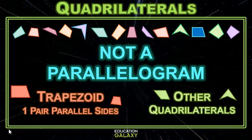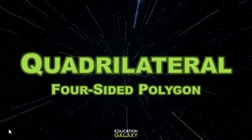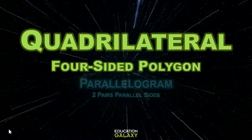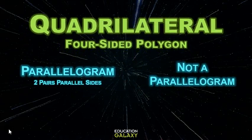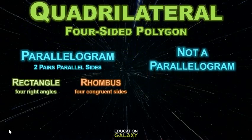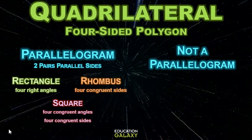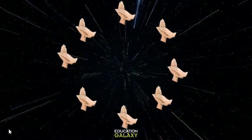Let's summarize what we've learned today. We've learned this big word — quadrilateral — and that it is a four-sided polygon. Some of those are parallelograms, and some are not. Of those parallelograms, some are rectangles, some are rhombuses, and some are squares. Of the not-a-parallelograms, some are trapezoids, and some are just another type of quadrilateral. Wow, you have learned a lot of big, fancy words today. Let's give ourselves a round of applause!